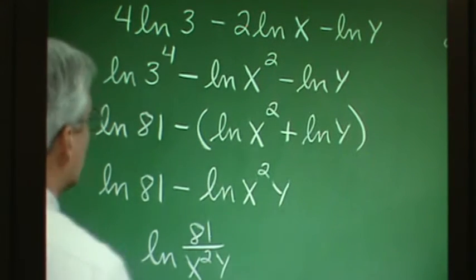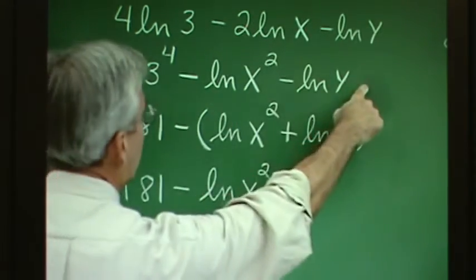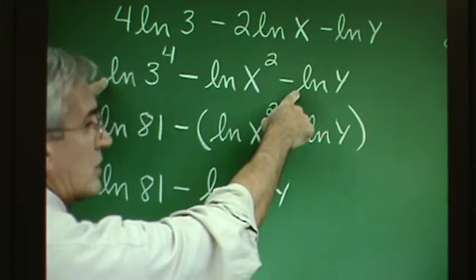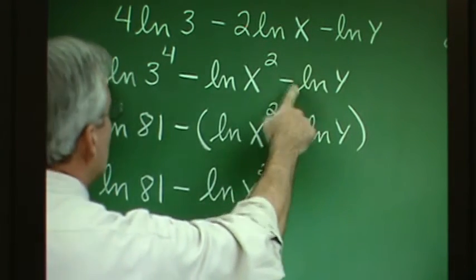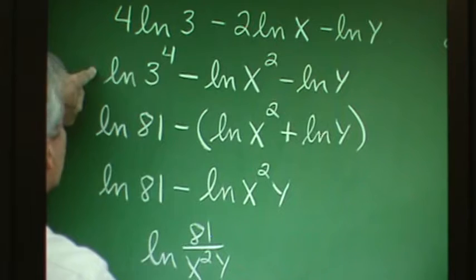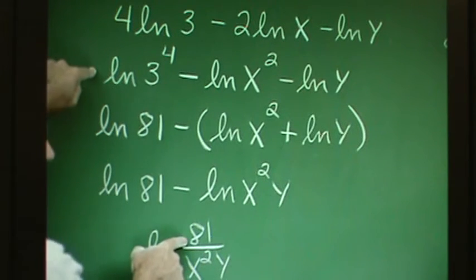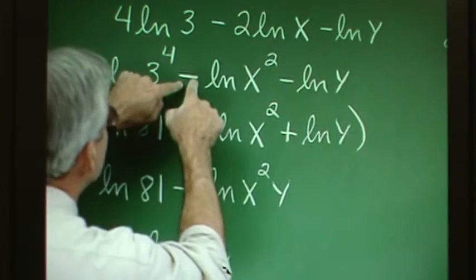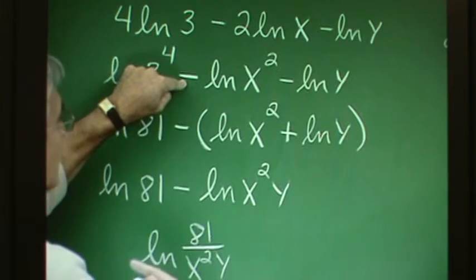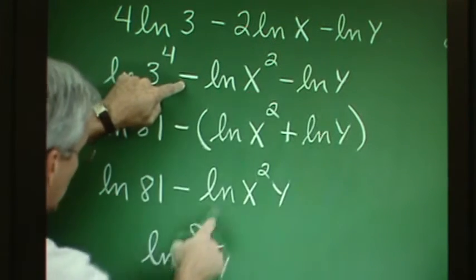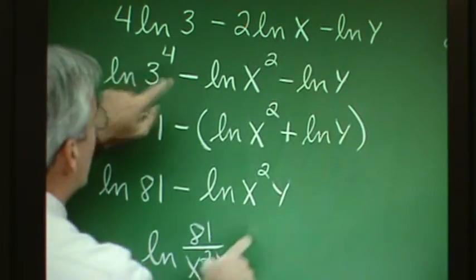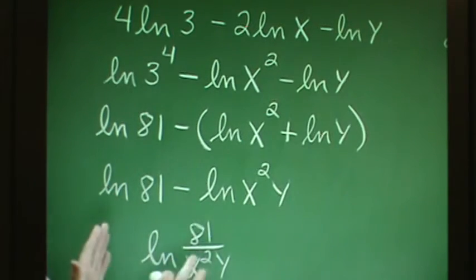Let me show a faster approach. When you're in a form where all coefficients are plus or minus one, all items preceded with a plus sign produce factors in the numerator, and all items preceded with a minus sign produce factors in the denominator. So x squared and y both appear in the denominator because they're preceded by minus signs. We can quickly go from that expanded form to the condensed form using this technique.